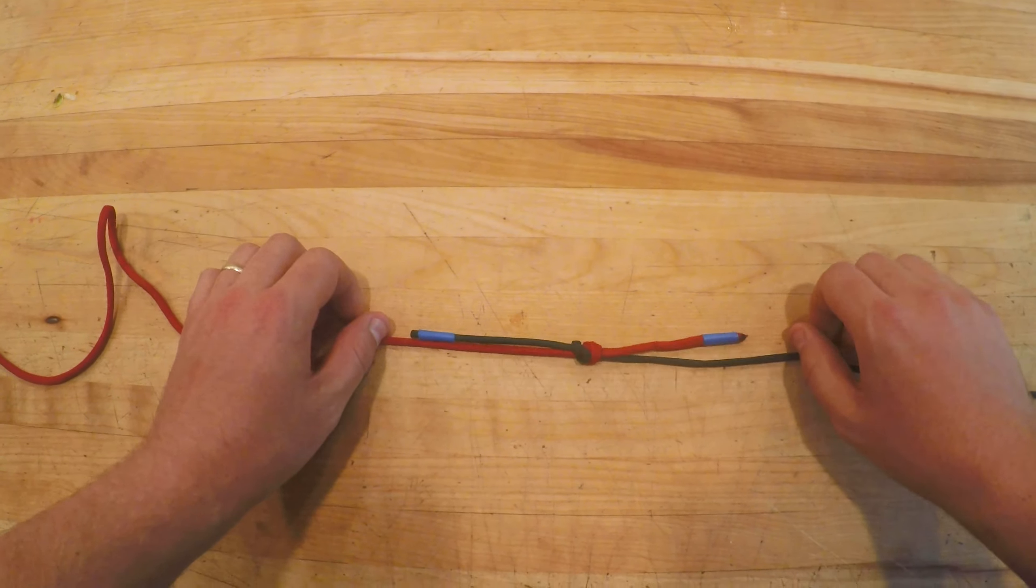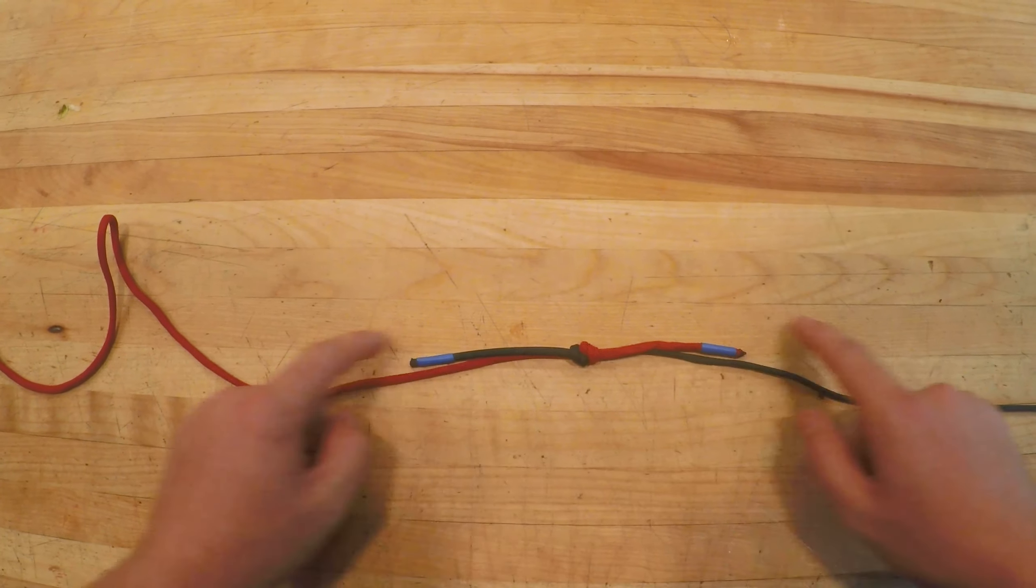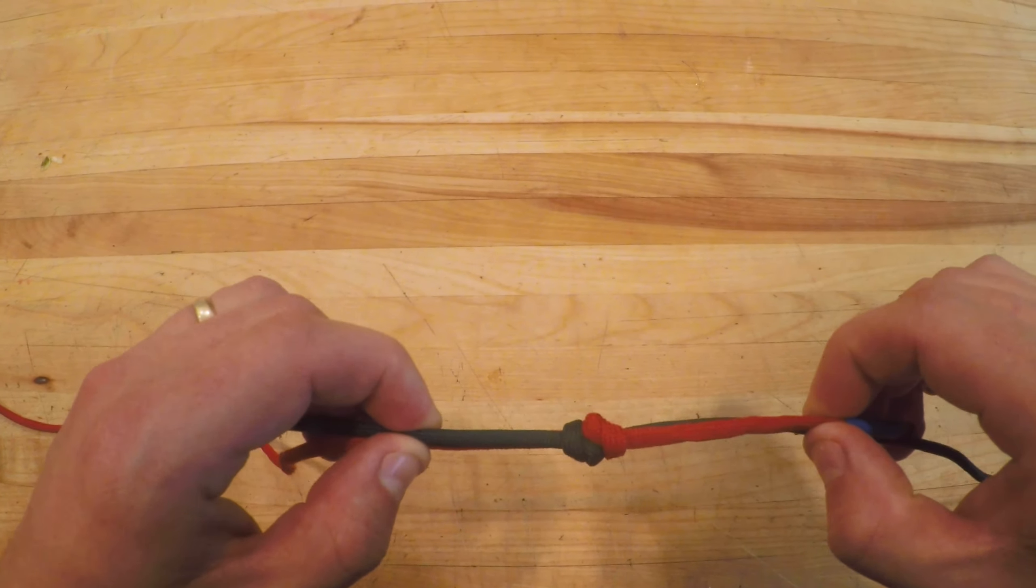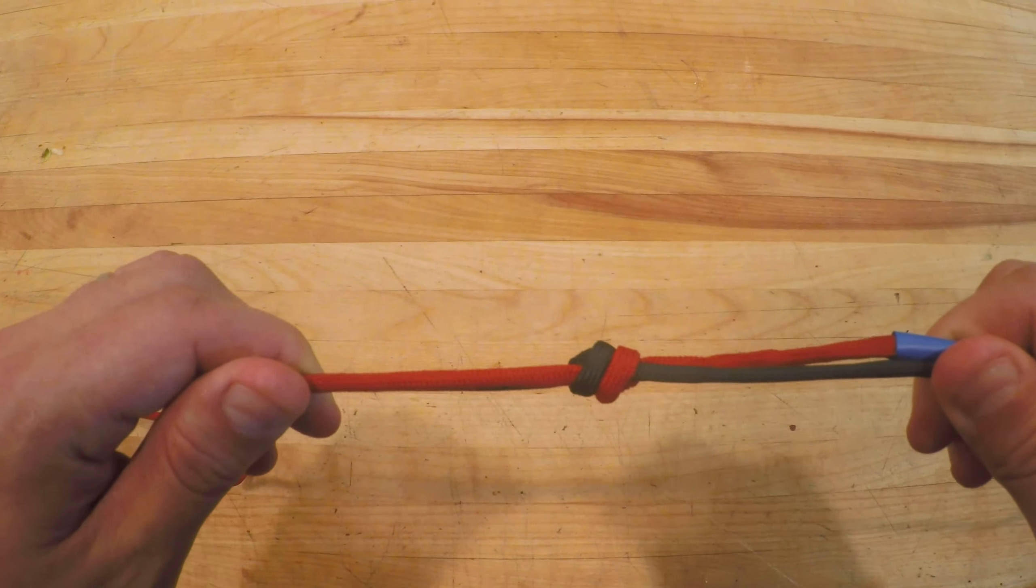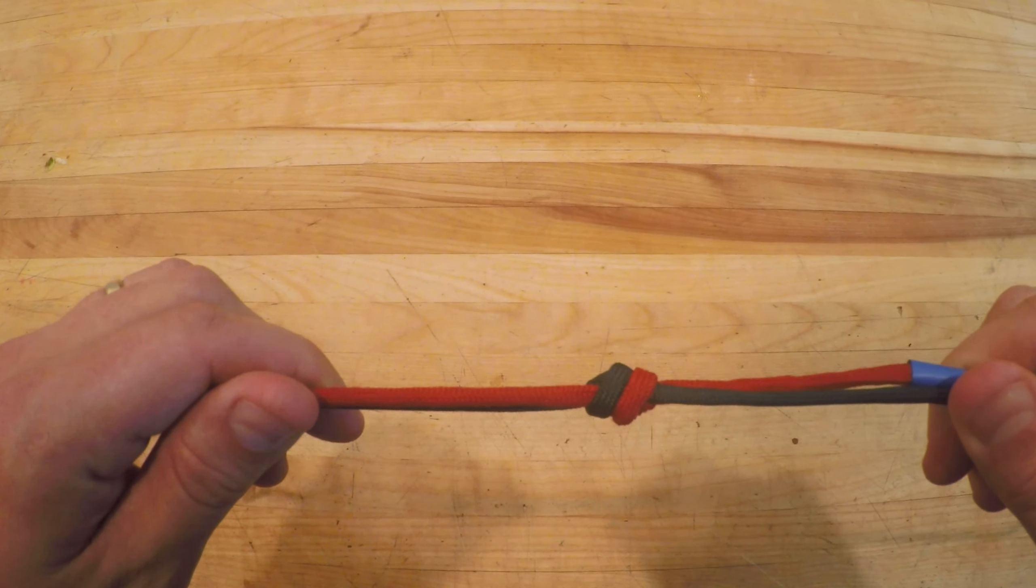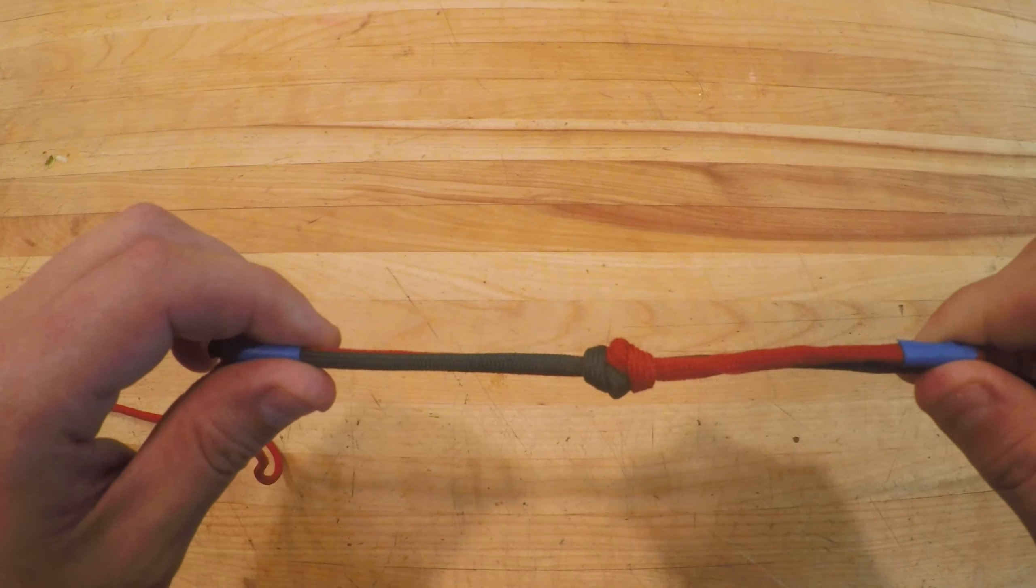You'll have your tails traveling away from each other. You should have what looks like two X's on one side and then two coils that travel parallel and look nice and neat on the other.